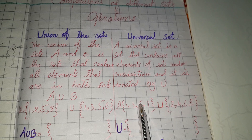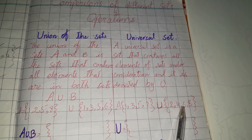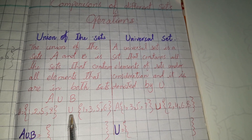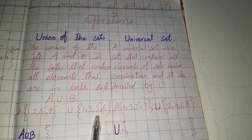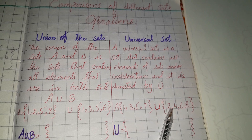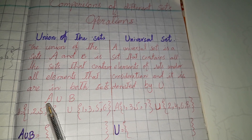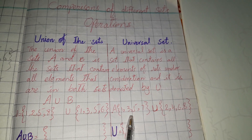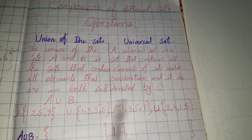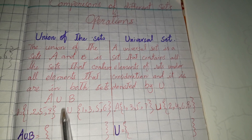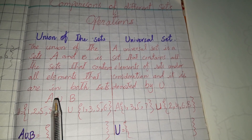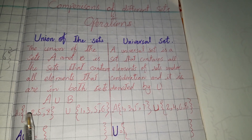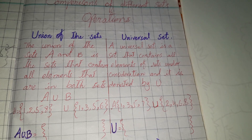Here we have sets A and B, and we also have the universal set. We need to identify the union of A and B, and separately identify the universal set of A and B. According to the definition, the union is the set that contains all elements which are part of A and B.